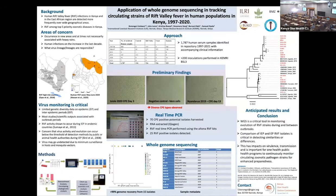To date, we have inoculated over 200 samples and observed cytopathic effect (CPE) in 70, as shown on the slide. Of the 70 CPE-positive samples, 25 were positive for RVF on PCR using the Altona kit.